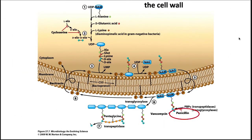Drugs like amoxicillin and penicillin are only effective against growing cells. There are also a number of different classes of drugs that attack cell wall synthesis but are not beta-lactam antibiotics — for example, bacitracin, cycloserine, and vancomycin.